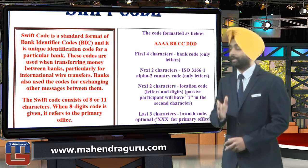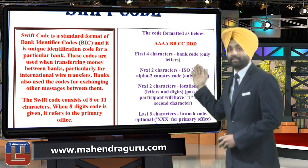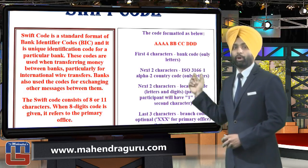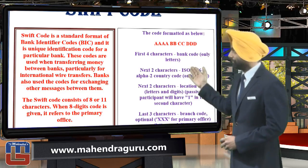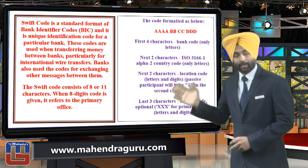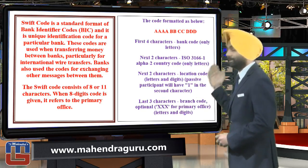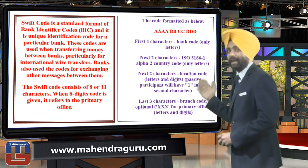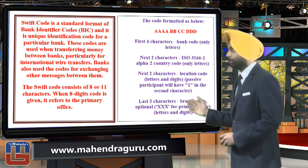Ab hota kya hai, isko jaante hai. Jab hum baat karte hai ek 8-digit mein likhe Swift code ki, tab isko primary code ke naam se jaante hai. Agar 11-digit Swift code ki baat karein, toh last ke 3 characters utni importance nahi rakhte jitne shuru ke 8 rakhte hai. Ab kya classification hota hai — dhyan se dekhe: pehle 4 characters woh batate hai aapka bank code; doosare 2 batate hai woh bank kis country mein maujood hai — the country code; next 2 batate hai ki kis location pe woh bank maujood hai; and in case last ke 3 characters bhi maujood hai, woh batate hai woh kis branch ko denote kar rahe hai. Yeh hai aapka Swift code ka classification.